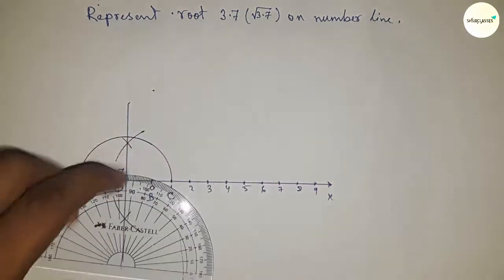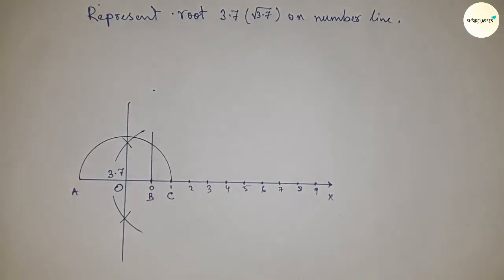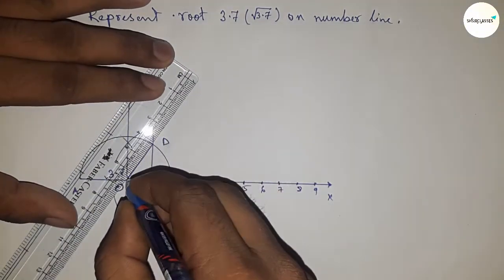So joining this and which meet the semi-circle at a point D. Next, joining this.